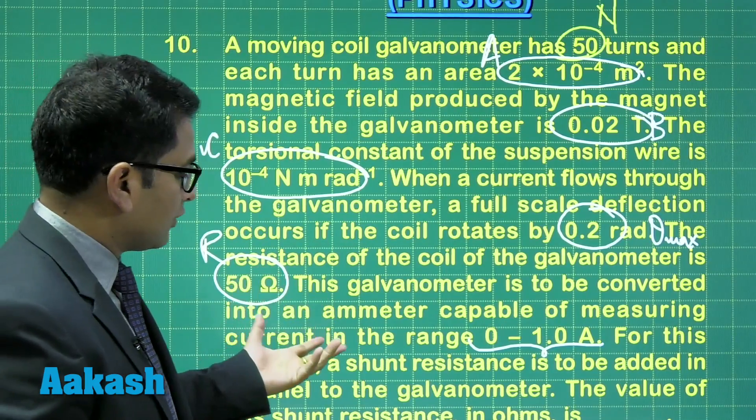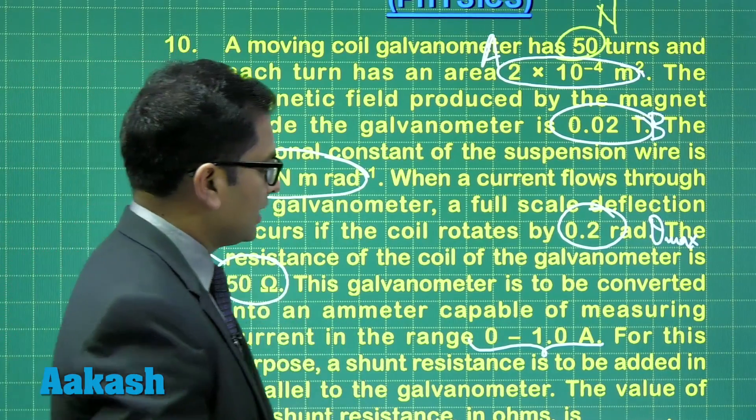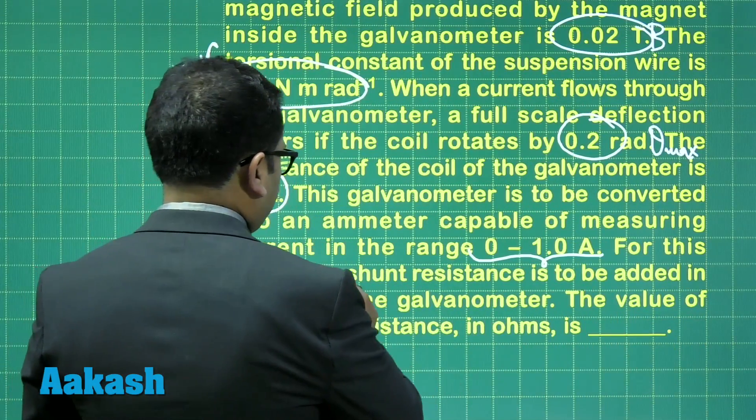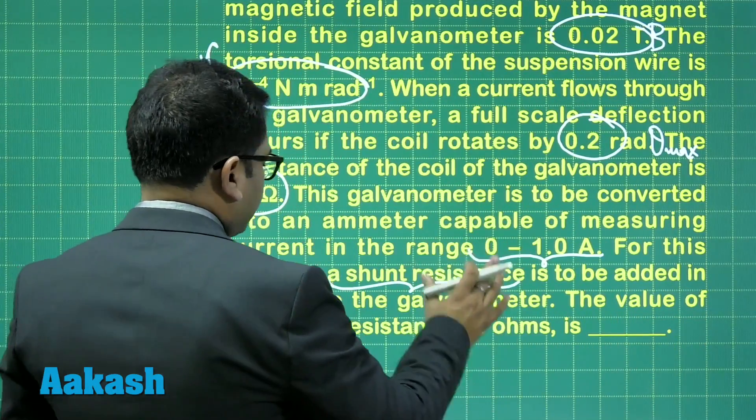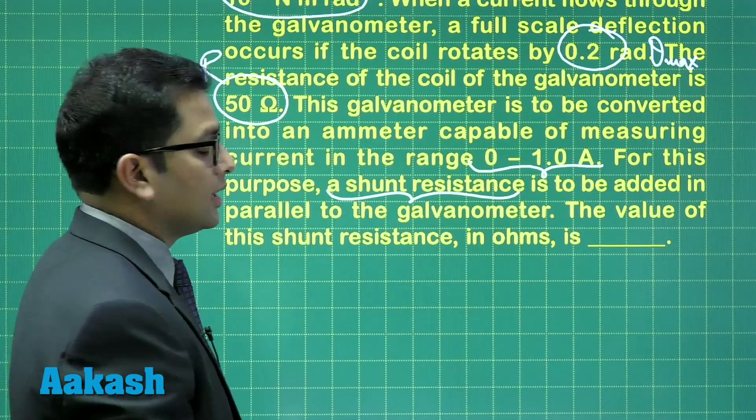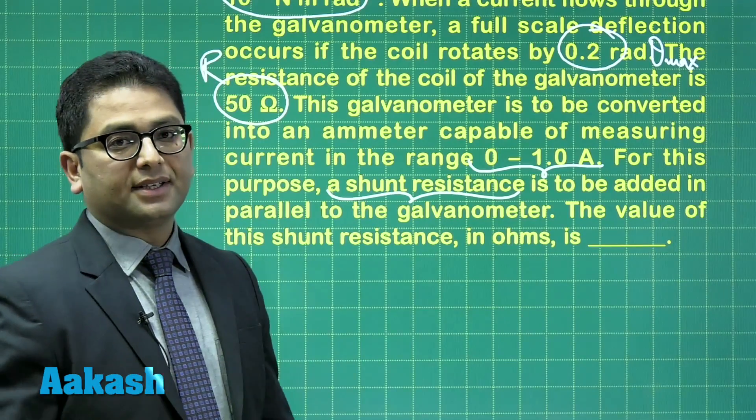So we need to calculate the value of shunt, and this shunt resistance has to be calculated in ohms. So here, first of all, see during maximum deflection...